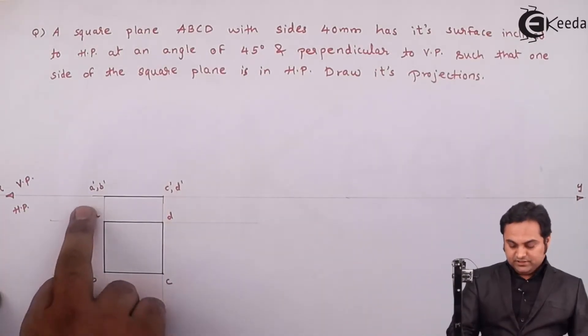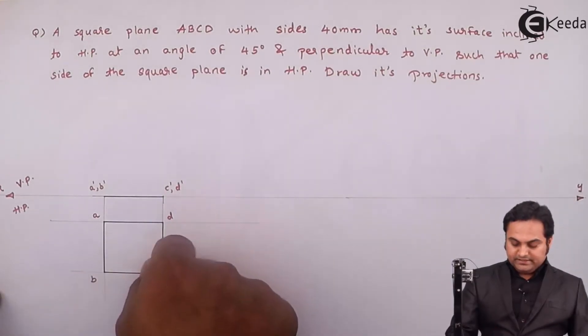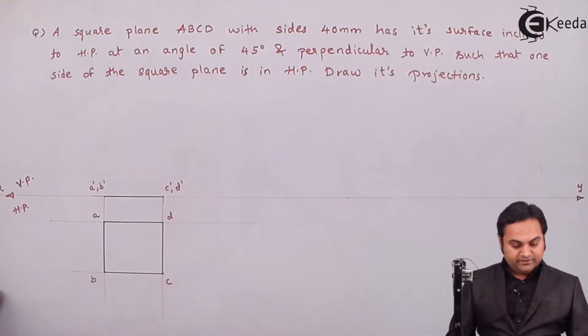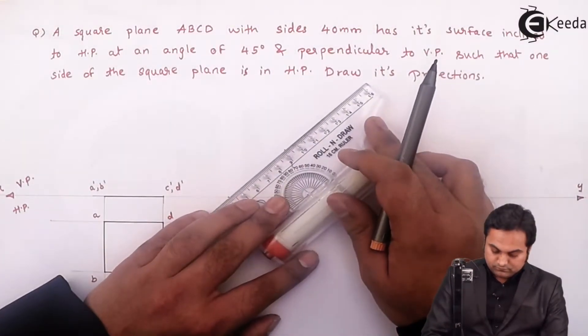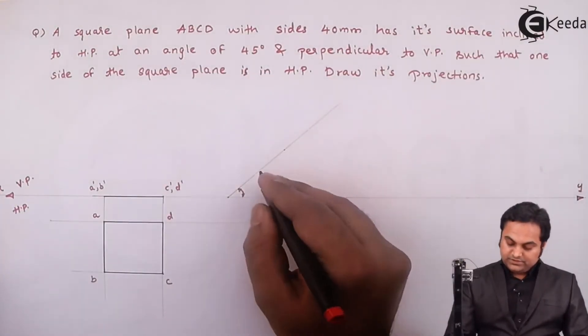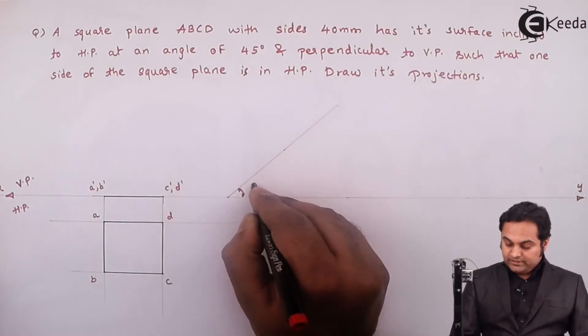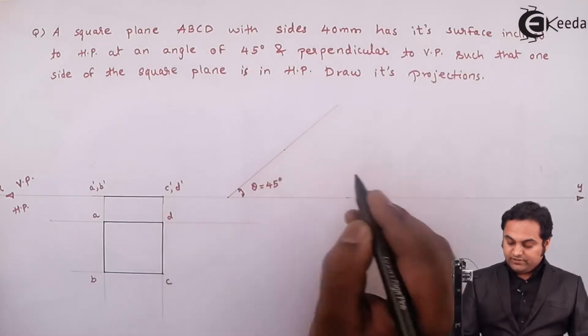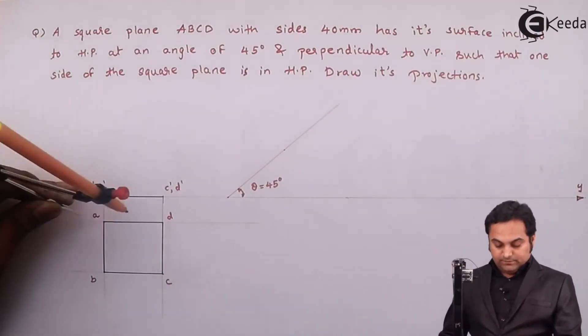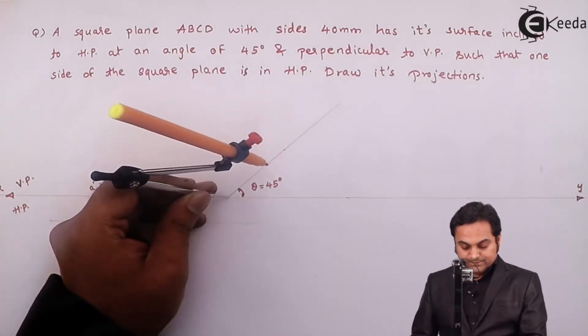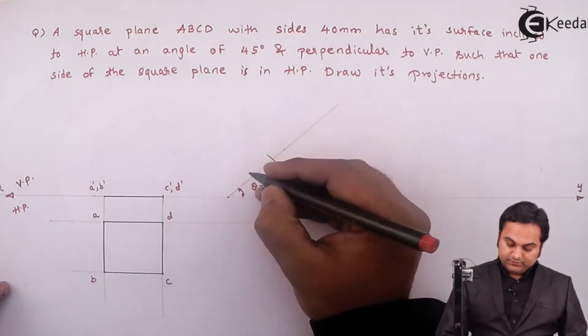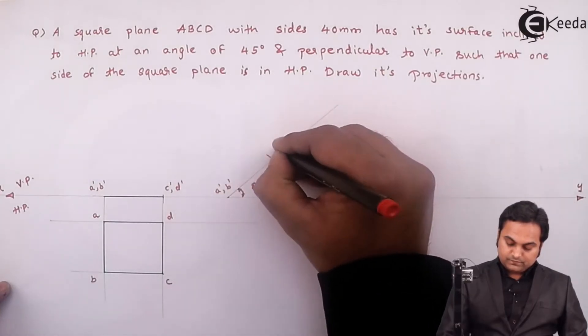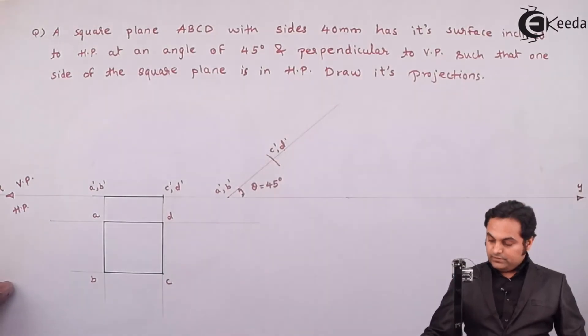So here I am fixing AB—in case of planes the left-hand side will be the reference. Fixing the plane on the left-hand side and then turning the square at an angle of 45 degrees means this line will be tilted at 45 degrees. Since it is with respect to HP, that angle is called theta, and theta equals 45 degrees. The length of the plane is from A' B' up to C' D'. Giving the notations here, then making this plane dark.